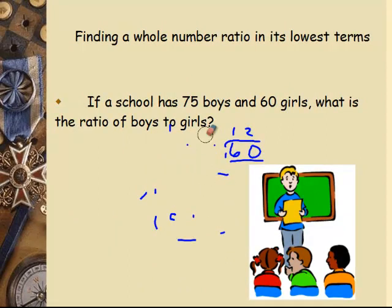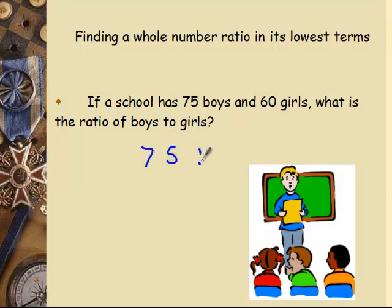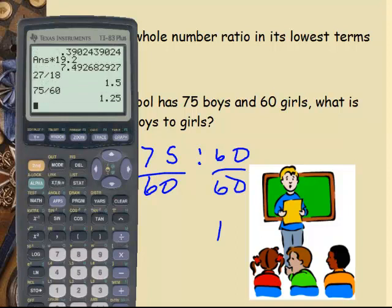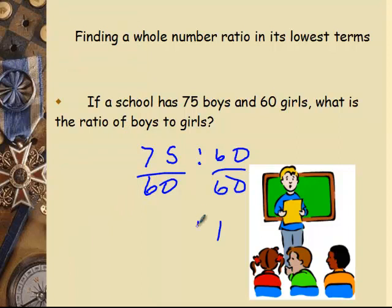Again, let me erase our answers here. Go back to our original numbers, which were 75 and 60. So 75 to 60 ratio, divide them both by 60. 60 divided by 60 is 1. 75 divided by 60 is 1.25.